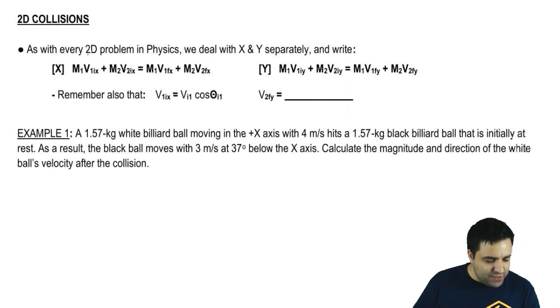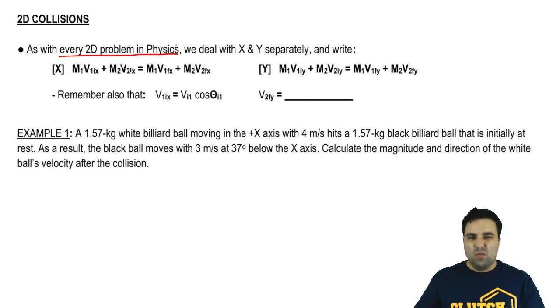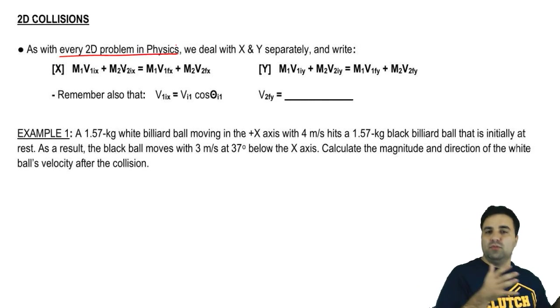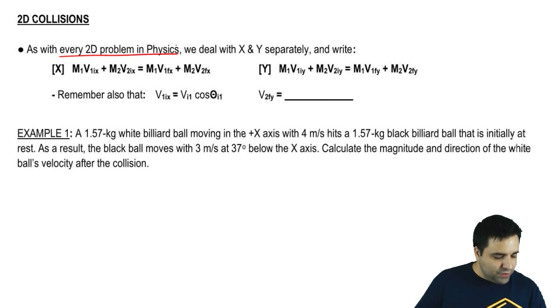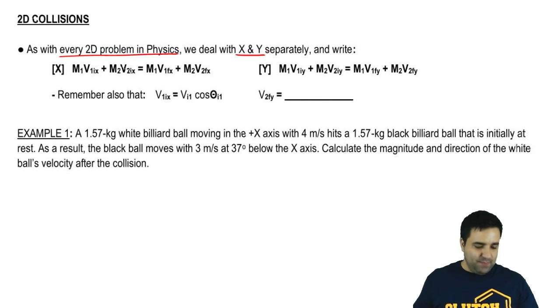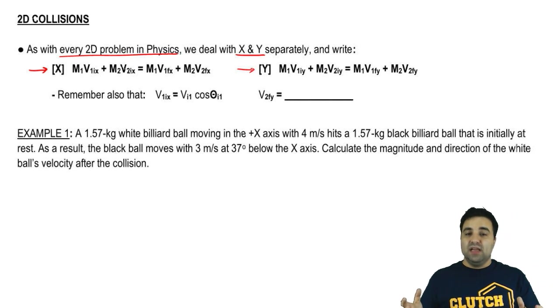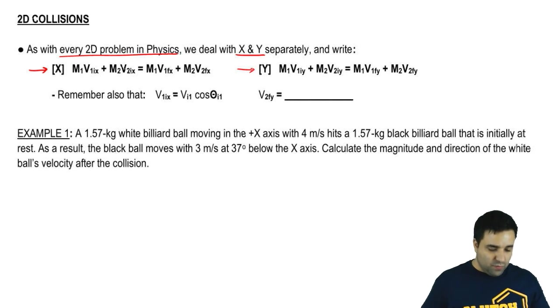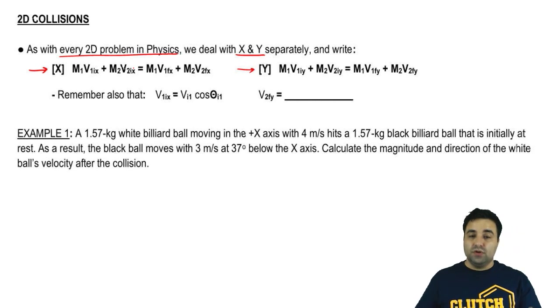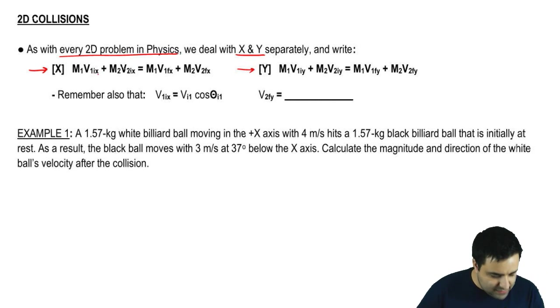As with every two-dimensional problem in physics, whether it is a velocity, force problem, momentum, collision problem, we're going to treat the x and y-axis separately. So what we're going to do is write the momentum equation, because this is a collision, but we're going to do it twice. One for the x-axis, one for the y-axis, and we're going to treat the x and y-axis separately as if they had nothing to do with each other. Notice that this is just m1v1, m2v2, our long momentum equation, except this has a bunch of x's. This is x only, and this is y only. We don't mix them.